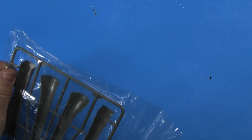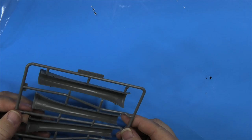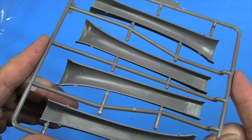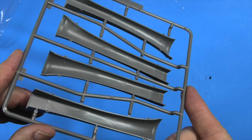So much. Let's look at these intakes. Lots and lots of plastic. There are many ejector pin marks inside those. Once you determine if you're going to be able to see inside those, you're going to have to clean them up. But they are full length intakes.